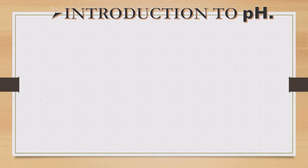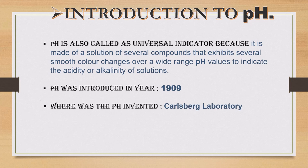Introduction to pH. pH is also called a universal indicator because it is made up of a solution of several compounds that exhibit several smooth color changes over a wide range of pH values to indicate the acidity or alkalinity of a solution. It was introduced in 1909 at Carlsberg Laboratory.